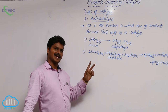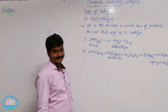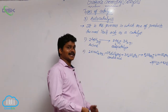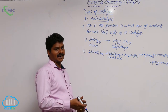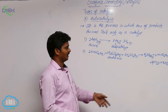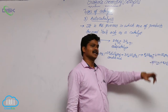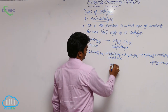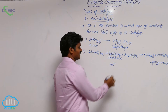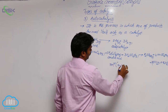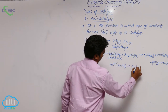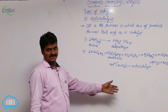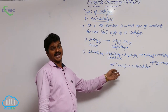Here KMnO₄ acts as the oxidant, whereas oxalic acid acts as the reductant. This reaction is also initially slow, but after some time it is accelerated due to the formation of manganese ions (Mn²⁺). So in this reaction, MnSO₄ acts as the autocatalyst — the Mn²⁺ ion within MnSO₄ is what acts as the autocatalyst.